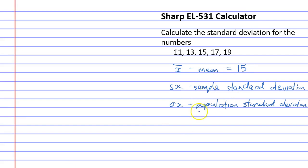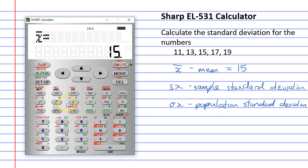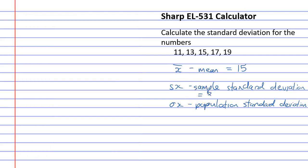And then we'll find our sample and population standard deviations. So alpha SX, which gives you your standard deviation, came out as 3.16. We'll just do it to two decimal places. 3.16.